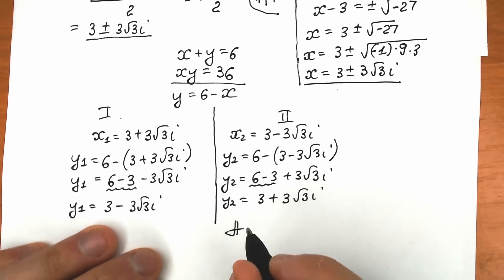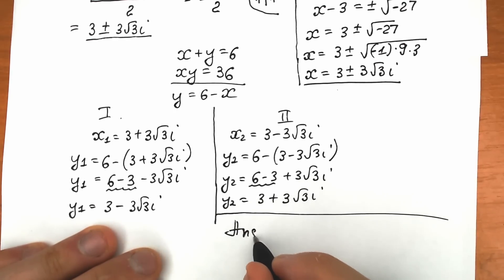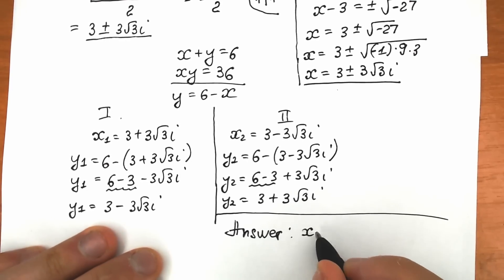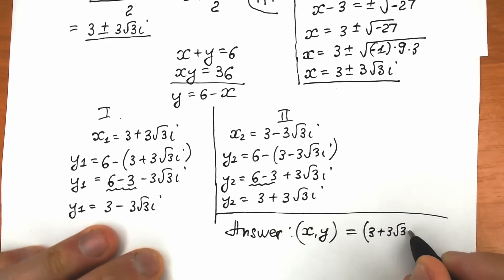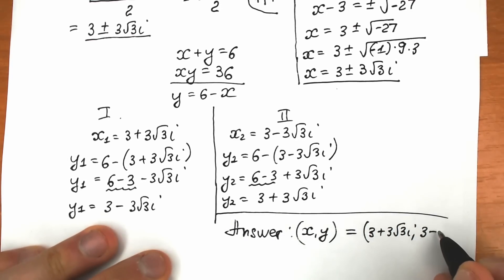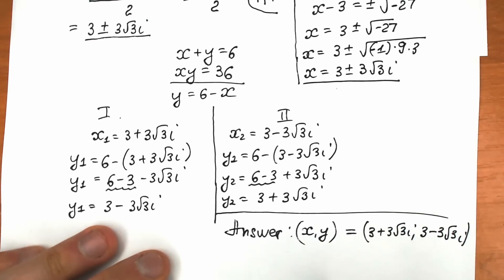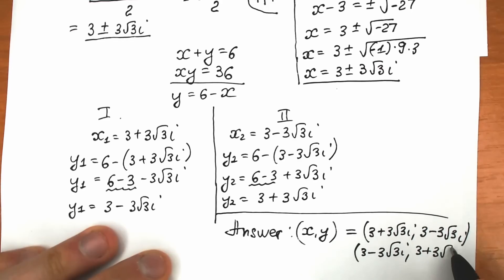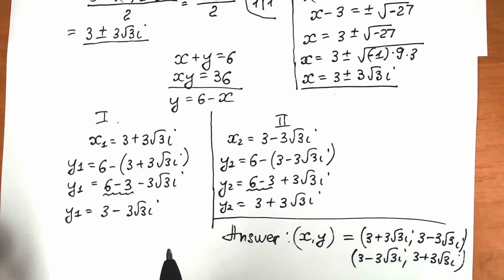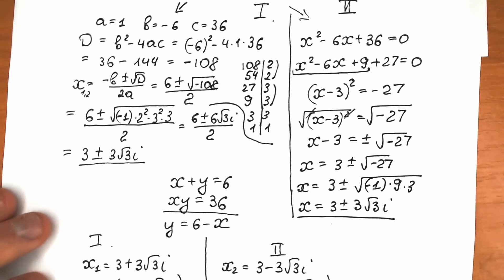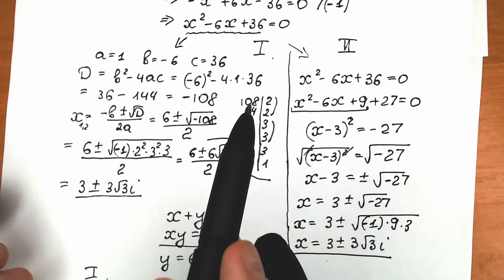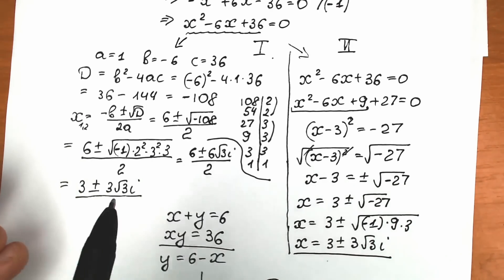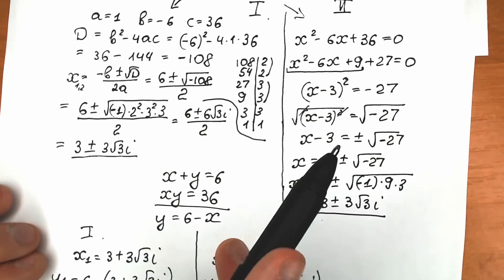So our final answer has two complex solution pairs: the first pair is x₁ equals 3 + 3√3·i and y₁ equals 3 minus 3√3·i; the second pair is x₂ equals 3 minus 3√3·i and y₂ equals 3 + 3√3·i. The completing-the-square approach is a little faster, while the discriminant method is a little longer since you need to simplify √108.